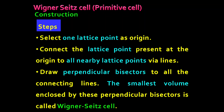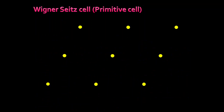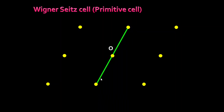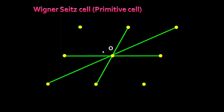Now I will show the exact construction through animation. Suppose this is an array of lattice points — these yellow circles are the lattice points. I am taking this center lattice point as the origin. Through this origin, I will connect the nearby lattice points by lines. These pairs of points in each direction are the nearby lattice points from this origin.